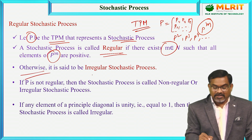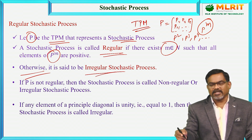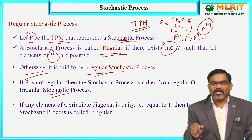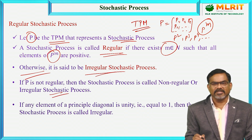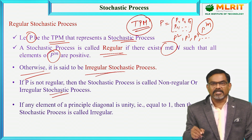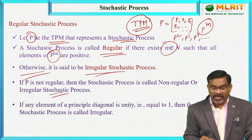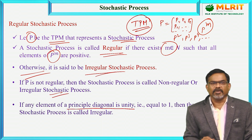Otherwise, the process is said to be an irregular stochastic process. Otherwise means, if any elements of P power M are zeros, then it is an irregular stochastic process. To check whether the given matrix is regular or not, we need to find the powers of P and check whether all the elements are non-zero. A transition probability matrix will have non-negative elements, but here all elements must be positive — there should not be any zero element. To check whether a matrix is irregular, a simple condition: if there is at least one element in the principal diagonal equal to unity, then the matrix is said to be irregular and the process is said to be an irregular stochastic process.